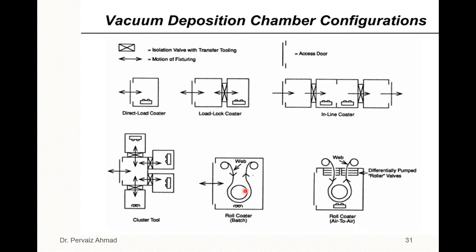This symbol represents the roll coater. A similar symbol with a slight difference represents the air-to-air roll coater. The difference is the presence of differentially pumped roller walls — that is what distinguishes these two symbols. That's all we have for the vacuum configurations. Thanks for watching — see you in more lectures with more detail about the vacuum system. Bye bye.